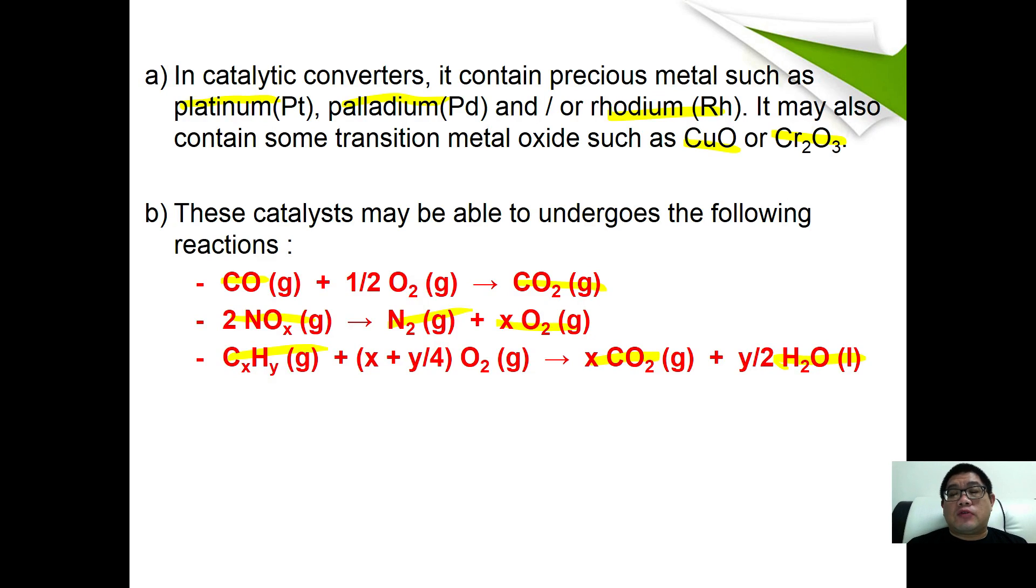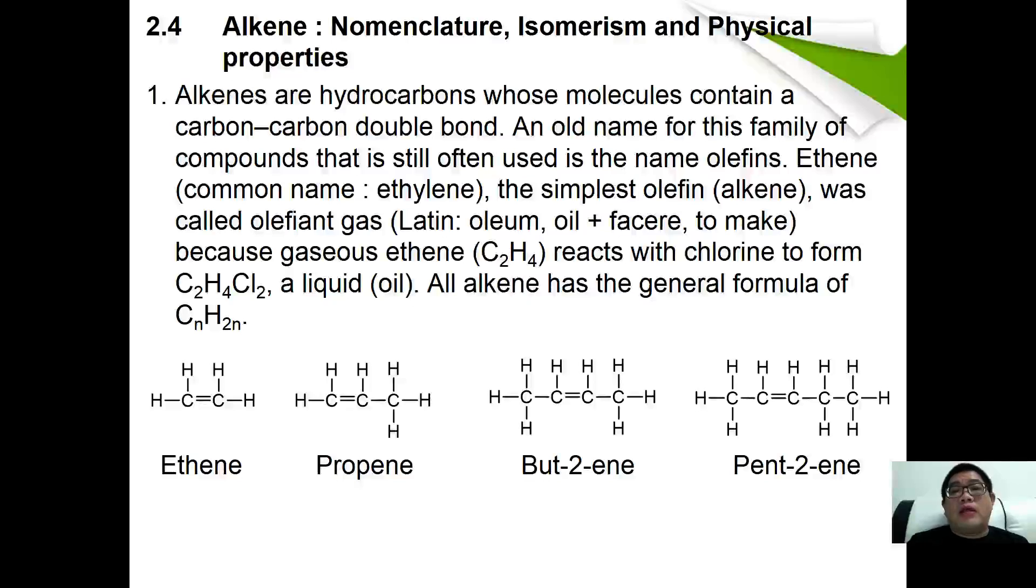We'll now introduce another hydrocarbon compound known as alkene. Alkenes are hydrocarbons whose molecules contain carbon-carbon double bonds. Some old names for this family is olefin, because ethene is also more known as ethylene—the simplest olefin which can be used to produce olefin gas. When treated with chlorine, it produces a liquid oil with a yellow color. All alkenes have the general formula CnH2n. Here are a few examples of simple alkenes: ethene, propene, but-2-ene, and pent-2-ene.